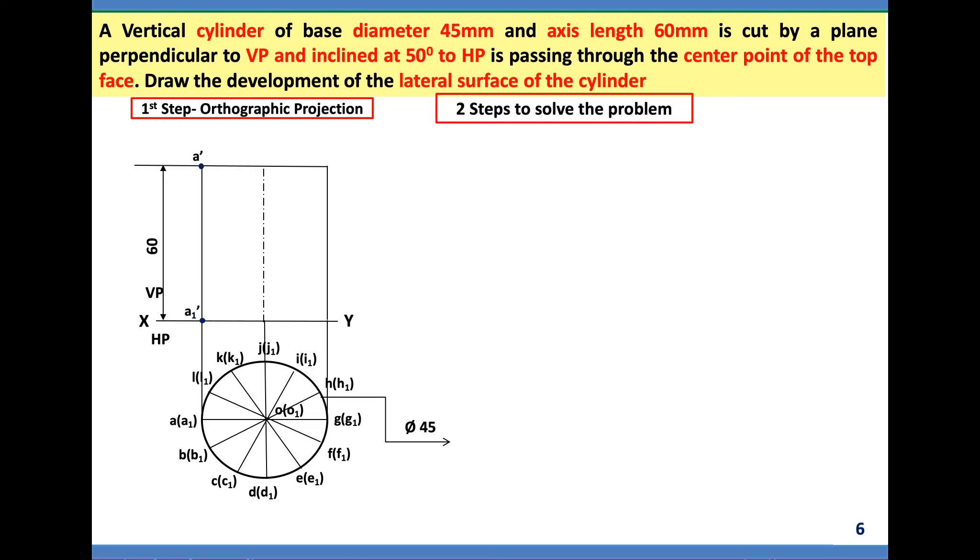One by one the front view notation is marked. This line represents the top surface of cylinder, this line represents the base of the cylinder. Here it has got A, B, C, D, E, F, G, H, I, J, K, L. Here it has got A1, B1, C1, D1, E1, F1, G1, H1, I1, J1, K1, L1. The observer will be standing here.